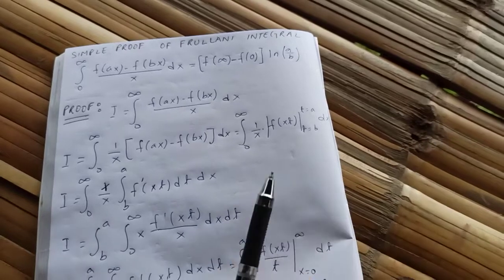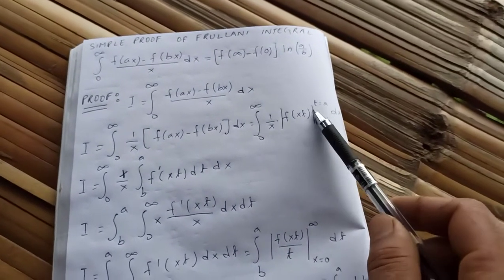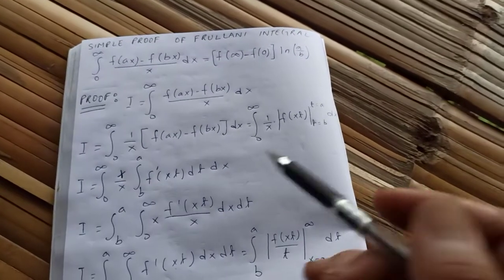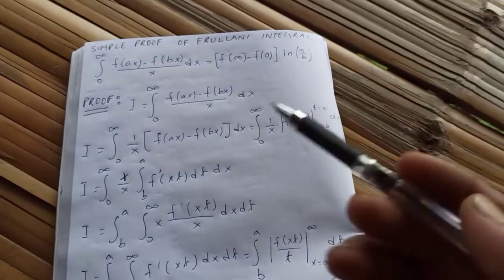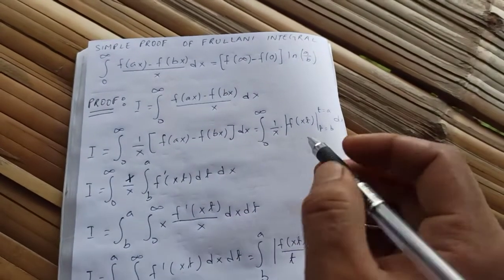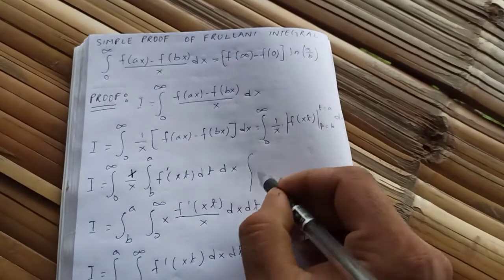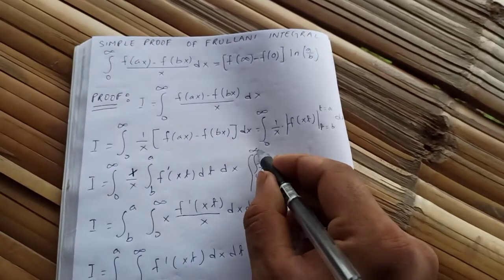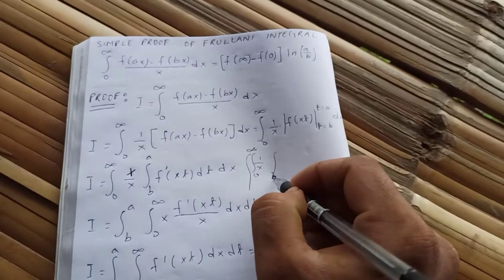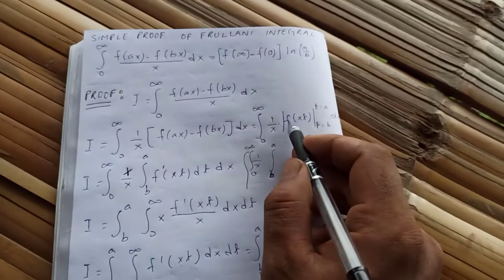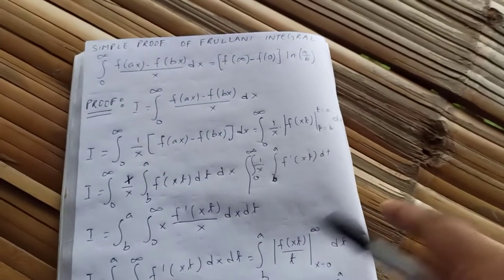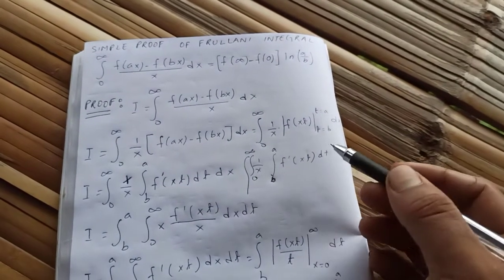So we have the integral from 0 to infinity of 1/x times the integral from b to a of f'(xt) dt, dx. This is the derivative of f(xt) with respect to t.